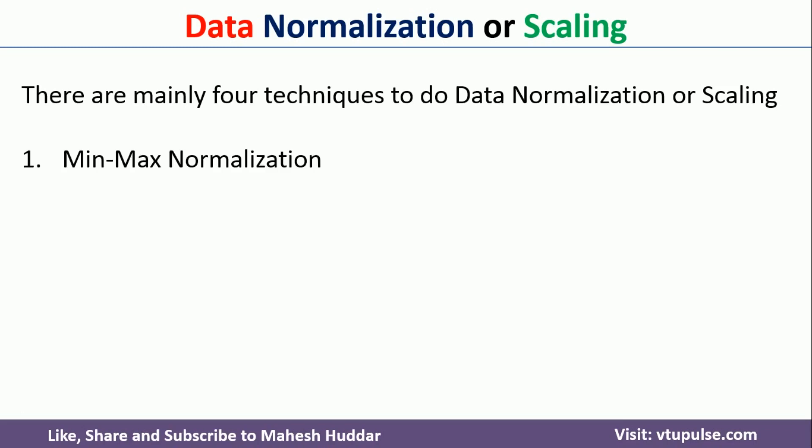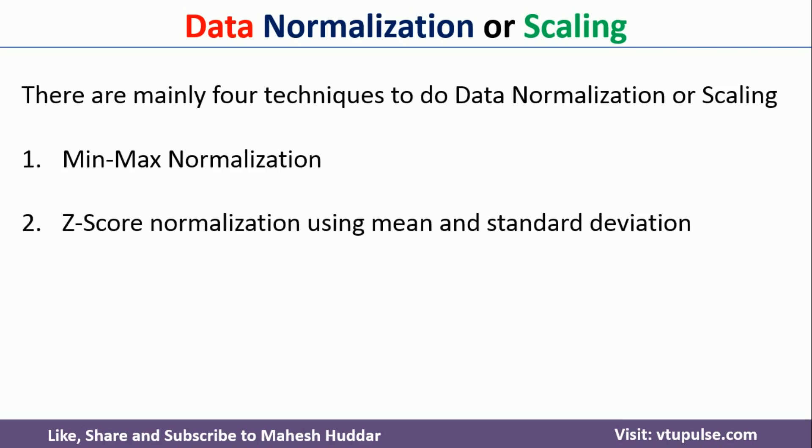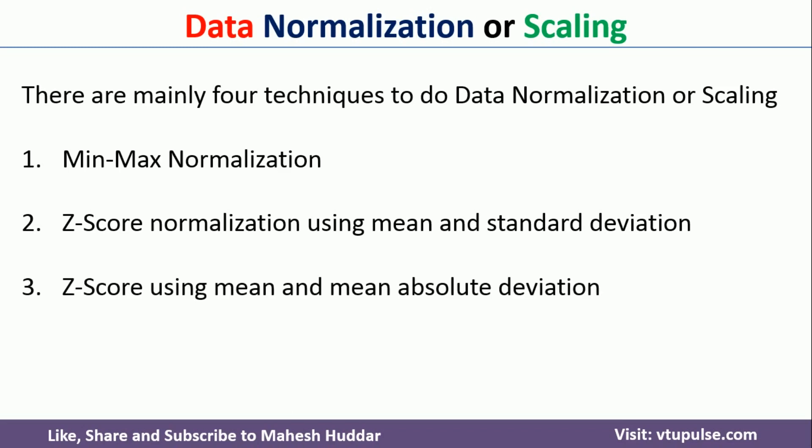The first one is min-max normalization. The second one is z-score normalization using mean and standard deviation. The third one is z-score normalization using mean and mean absolute deviation. The fourth one is normalization using decimal scaling.